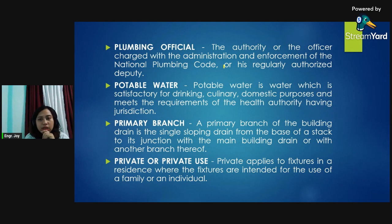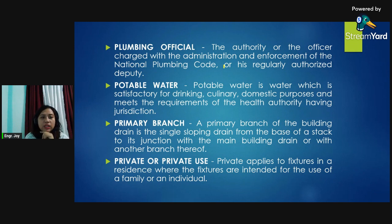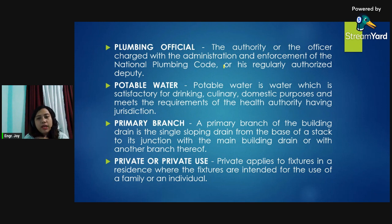Potable water: water which is satisfactory for drinking, culinary, and domestic purposes and meets the requirements of the health authority having jurisdiction. Primary branch: a primary branch of the building drain is the single sloping drain from the base of the stack to its junction with the main building drain or with another branch.